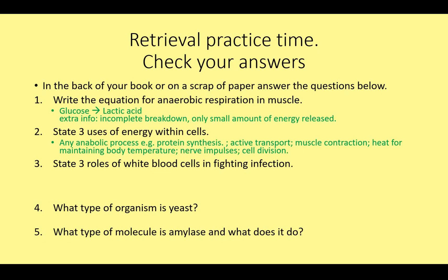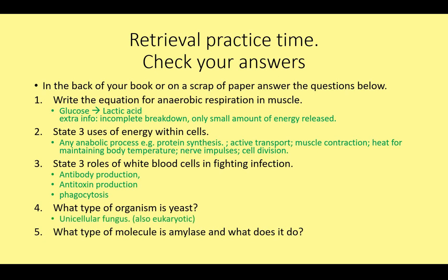Roles of white blood cells include antibody production — those specific proteins that bind to antigens — antitoxins, and phagocytosis. Yeast is a fungus, a unicellular eukaryote like plant and animal cells. It has a nucleus, membrane-bound organelles, and extracellular digestion — it secretes enzymes like amylase to hydrolyze starch into sugars.